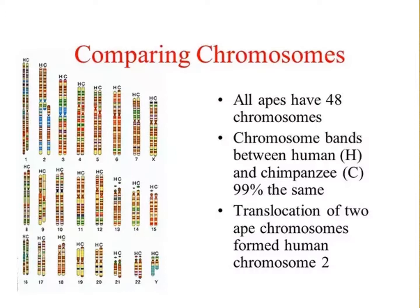However, the fusion event that resulted in the formation of human chromosome number 2 is not at all inconsistent with a theory of a separate ancestry of humans and apes, despite the very common assertion by mainstream scientists and Darwinian apologists that the fusion of chromosome number 2 is very clear evidence of common ancestry of humans and apes. So how could I possibly suggest otherwise, against the vast majority of mainstream scientists?